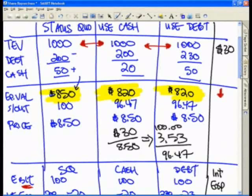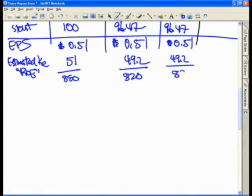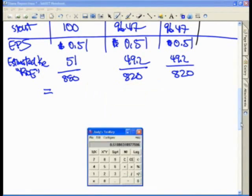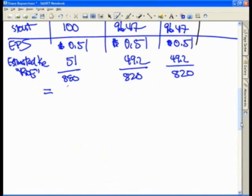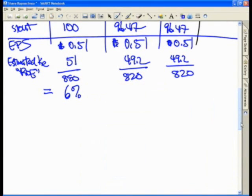$51 divided by $850, $820, and this will get you $51 over $850 equals 6% ROE. $49.2 over $820 also gets you a 6% ROE in quotes cost of equity.